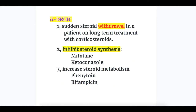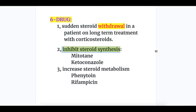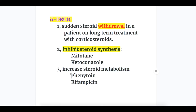Number five, congenital adrenal hyperplasia may also cause bilateral hemorrhages in the adrenal cortex. Number six, drugs causing bilateral adrenal hemorrhages — three types: first, sudden steroid withdrawal in a patient on long-term corticosteroids; second, drugs that inhibit steroid synthesis, including mitotane and ketoconazole; third, drugs that increase steroid metabolism, including phenytoin and rifampicin.